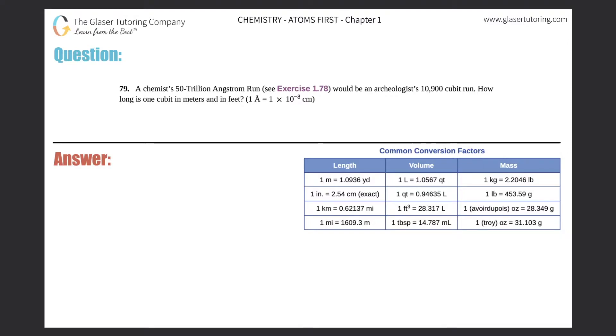Number 79: A chemist's 50 trillion angstrom run (see exercise 1.78) would be an archaeologist's 10,900 cubit run. How long is one cubit in meters and in feet? So they want two specific conversions - meters and feet - and they want to know how long one cubit is. That's basically the overall question here.